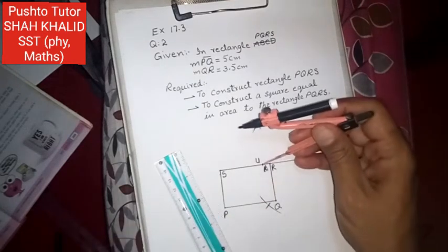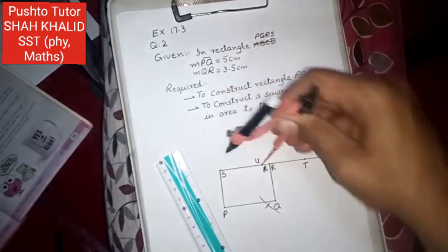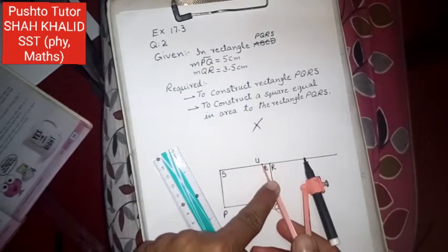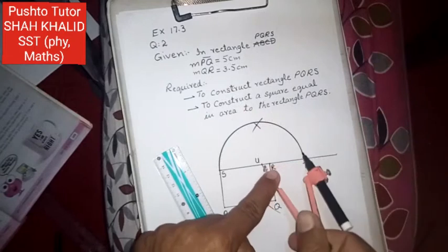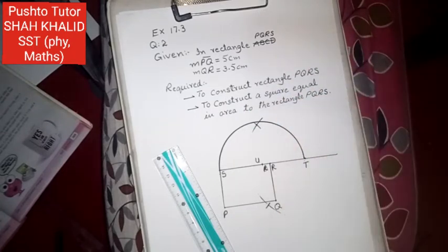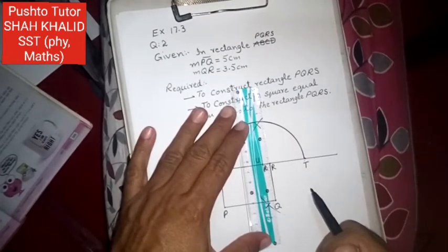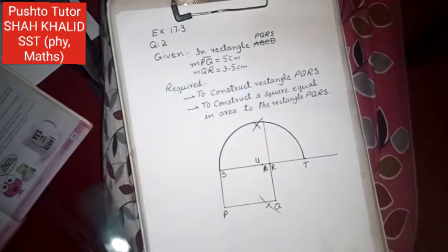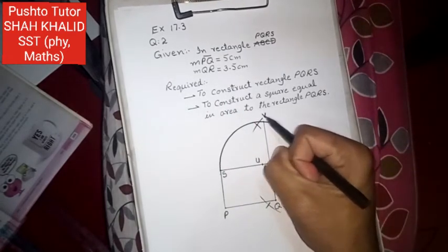Taking U as center, place the compass needle at midpoint U and open it to S or to T. Since both are equal from the midpoint, draw a semicircle. At the QR side, produce it so it intersects with the semicircle at one point. When it intersects, label that point.